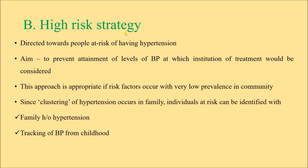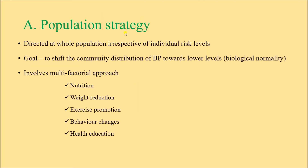Behavioral changes include stress reduction, smoking cessation, health education, and self-care. The high-risk strategy is directed towards people at risk of having hypertension; the aim is to prevent blood pressure from reaching levels where treatment would be considered. This approach is appropriate when risk factors occur with very low prevalence in a community. Since hypertension clusters in families, individuals at risk can be identified by family history or tracking of blood pressure from childhood. The approach is similar to the population strategy: dietary modification, weight reduction, exercise promotion, behavioral changes, and health education.